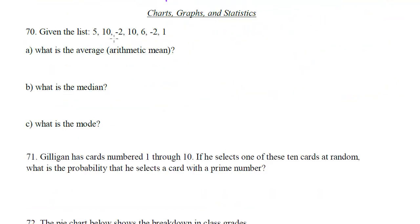Given this list, what is the mean? Well, to get the mean, we add them all up, so we do 5 + 10 + (-2) + 10 + 6 + (-2) + 1. The total equals 28. We divide it by the total number of numbers: 1, 2, 3, 4, 5, 6, 7, so the average is 4. What is the median? Well, to get that, we've got to list them in order from least to greatest, so we do -2, -2, 1, 5, 6, 10, 10. This is a 7-numbered list, so the 4th number, 1, 2, 3, 4 is our median, and there it is, that's right in the middle.